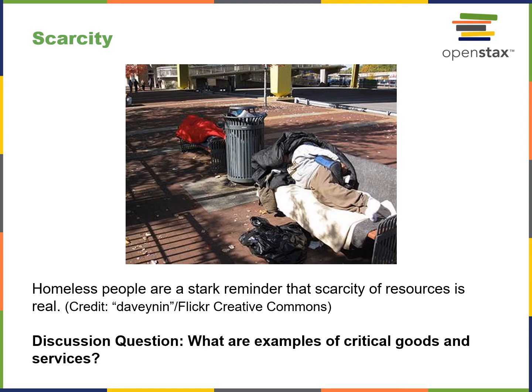Homeless people are a stark reminder of the scarcity of resources. For example, the city of San Francisco has a real scarcity of affordable housing. You might think about what are some examples of critical goods and services. With the COVID virus in play, one of them — for some reason or another — happens to be toilet paper. Sometimes things that don't make 100% sense become a high-demand item and quickly become scarce as a result.